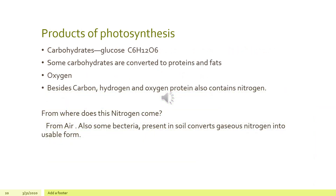By using the raw materials, when they undergo a chemical change, they are converted into carbohydrates. Some carbohydrates are converted to protein and fats. The other useful product is oxygen. Besides carbon, hydrogen, and oxygen, protein also contains nitrogen. In the atmosphere, almost 78% is nitrogen, but this nitrogen cannot be directly used by the plant — it has to be converted into another usable form first.